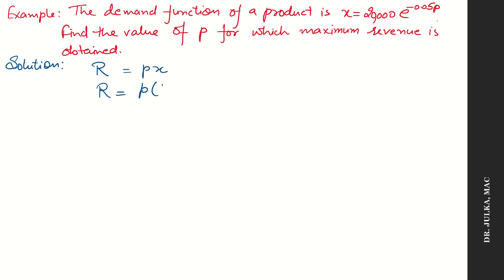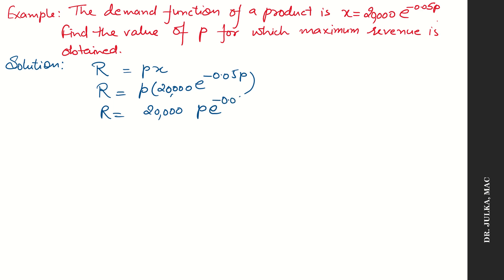Here, the value of x is 20,000 into e raised to the power minus 0.05p. Taking 20,000 common, we get revenue equals to 20,000 into p into e raised to the power minus 0.05p. Now differentiate with respect to p.